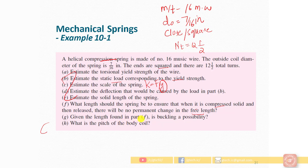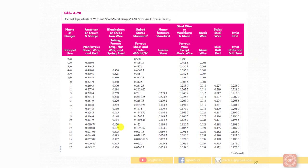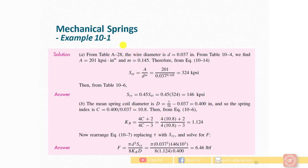Given the free length found in part F, we check if buckling is possible. If the length exceeds a certain range, there are chances of buckling. We also need to find the pitch of the spring body using the formula by substituting values.